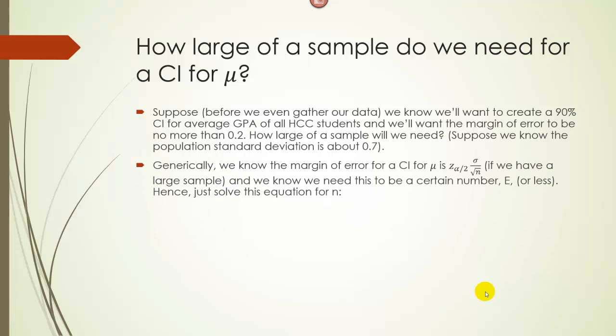So we know that the margin of error when we try to generate a confidence interval for μ, if we have a large sample, is going to be z times σ over square root of n. So if we know a margin of error and we know some estimate for σ, and we know our confidence level, we could actually figure out what sample size we need.